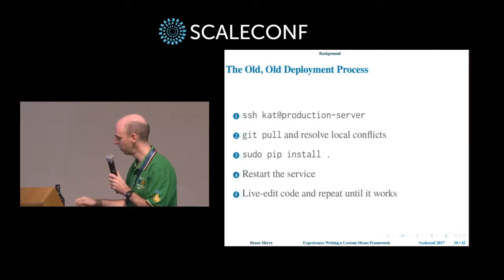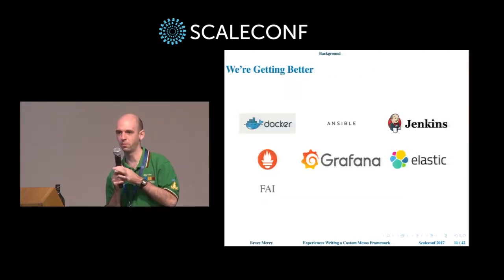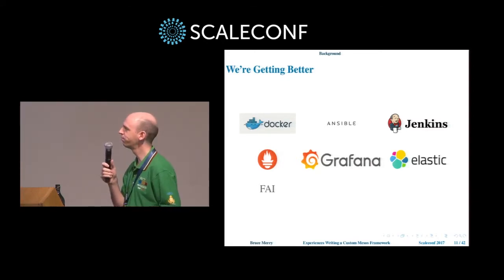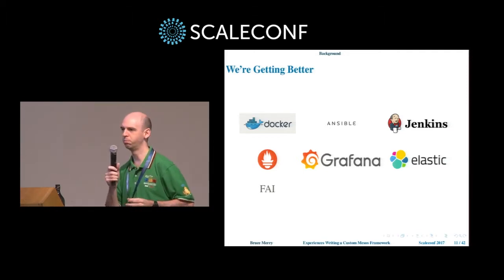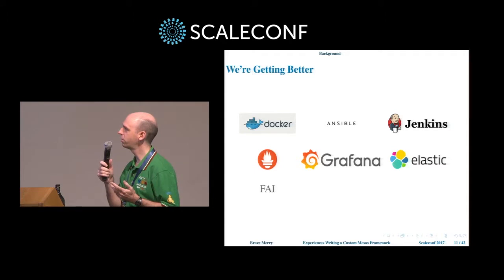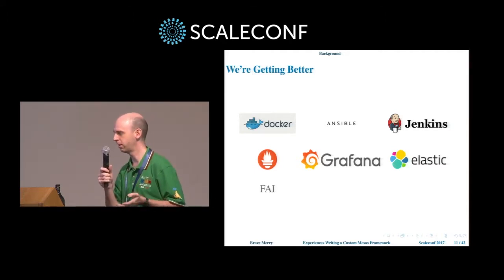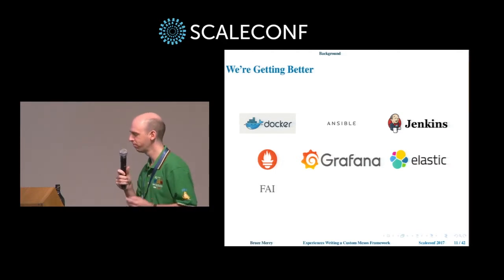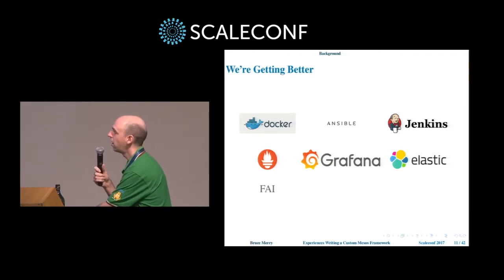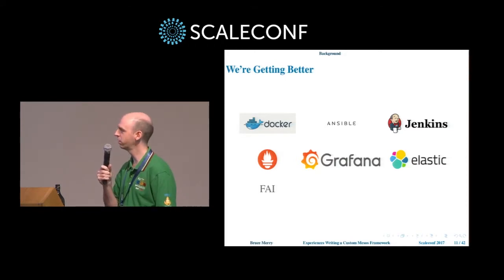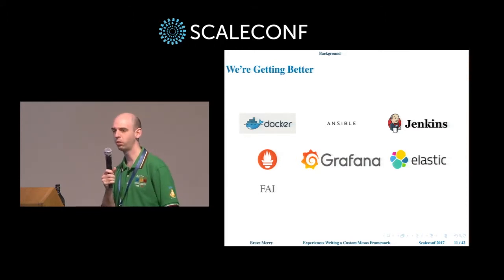We're not doing that in SDP anymore — this still happens in our organization though, which is quite terrifying. But we've moved on and are now trying to use all the latest flavors of the month. We've been using Docker for a bit over two years. We use Ansible and FAI to provision hardware, Jenkins for CI, Prometheus and Grafana for metrics, and the Elastic Stack for logging. One thing I'll mention is that just because you've put a tool in place doesn't mean everyone's on board. You have to develop the culture — you can't log into the server and poke things anymore; you have to do it through Ansible.